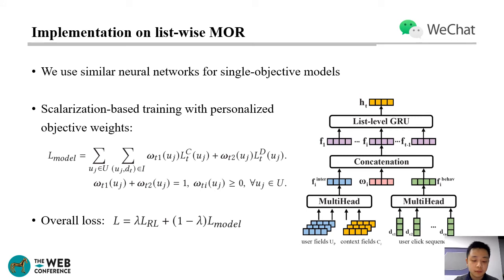For the neural network architecture of the Pareto-oriented RL model, we take user profiles, impression behaviors, click behaviors, recommendation contexts, and historical objective weights as inputs, and output a set of personalized objective weights for the current user and item pair. As for the single CTR and dual-time-oriented models, we use similar neural networks with different parameters. The overall loss of PAPER is the weighted loss combination of the Pareto-oriented RL model and the single-objective models.